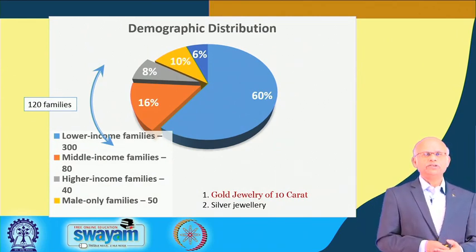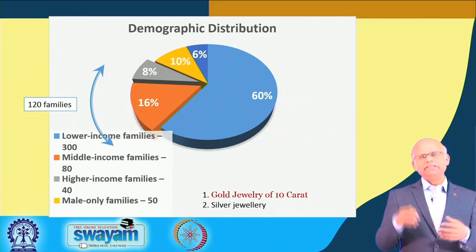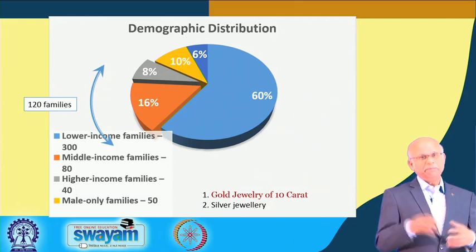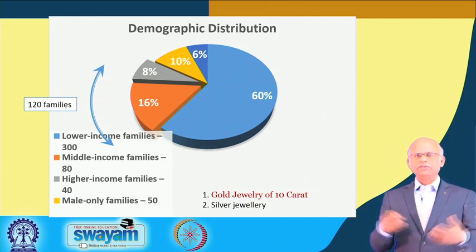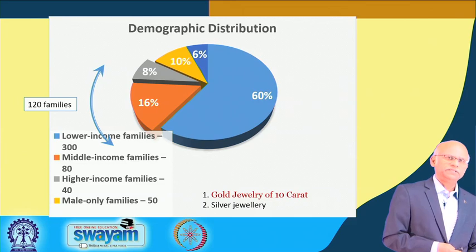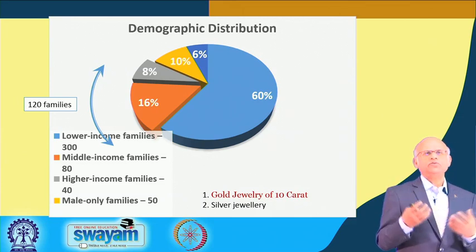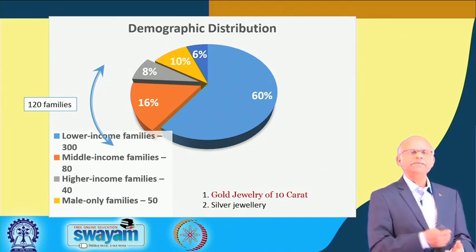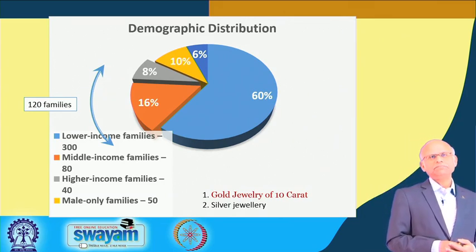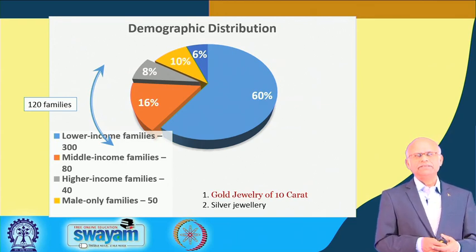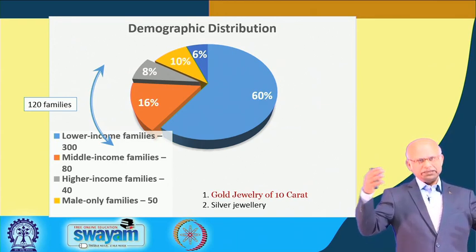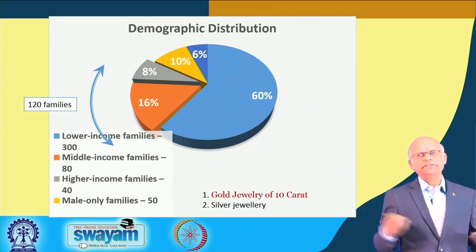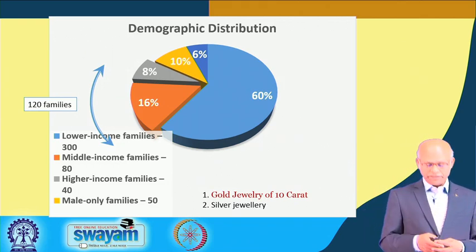This is the demographic distribution: lower income families are 300, middle income 80, high income families are 40, male-only families are 50. This is how the 500 families are distributed. You want to reach out only to middle income families — that means reaching only 80 families, which is 16 percent of the village. Your job is cut down to only 16 percent from 100 percent of the entire village.